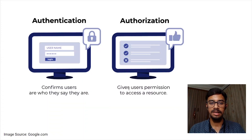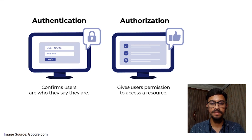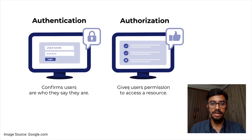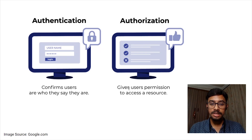Let us first understand how authentication and authorization work in a monolithic architecture. In authentication we verify who the user is, so we use their username and password. On the other hand, in authorization we try to find what the user can do, such as whether the user is permitted to create, read, update, or delete the files they are requesting.